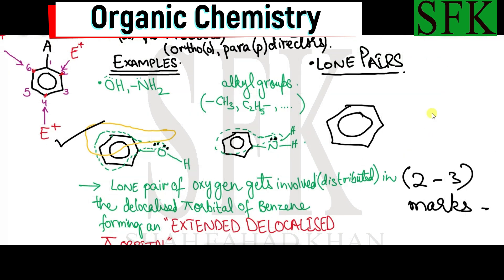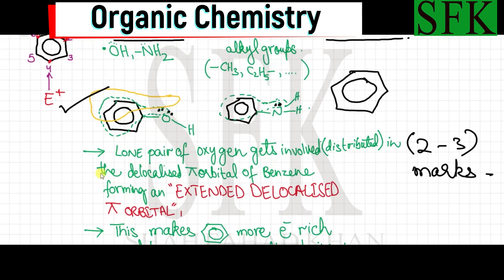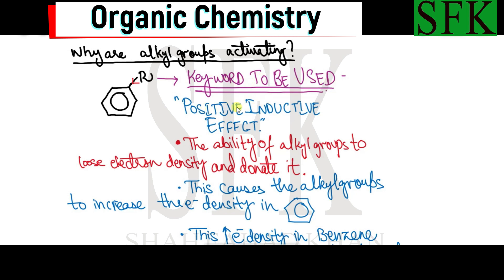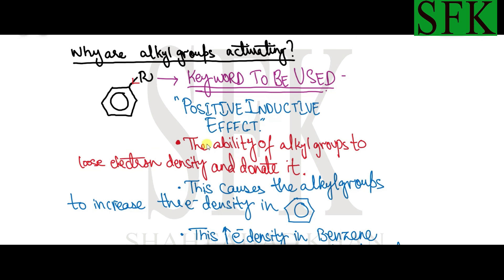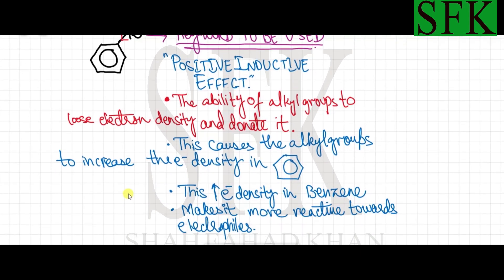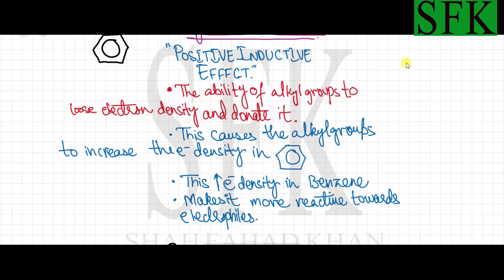For alkyl groups, the carbon atom does not have lone pairs, so how can it be an activating group? The key term here is the positive inductive effect. The positive inductive effect is the ability of an alkyl group to release its electron density. When an alkyl group is attached to a benzene ring, through the positive inductive effect it donates electron density to the ring, increasing the electron density in benzene and making it more reactive towards incoming electrophiles.